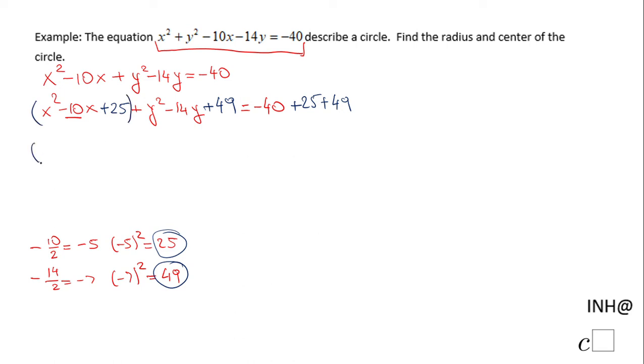And now we have a perfect square here, which is x minus 5 squared. How do you know that? Because it's right here. Plus the second perfect square is this trinomial, which is going to be y minus 7 squared.